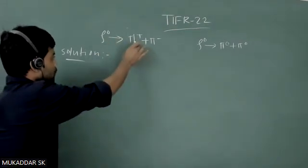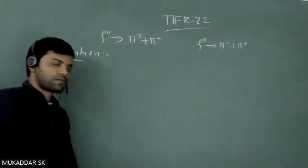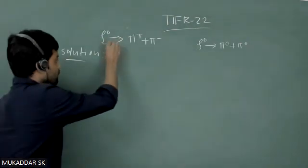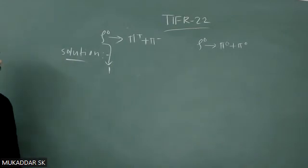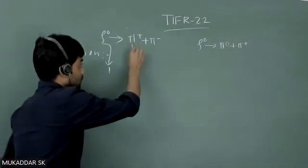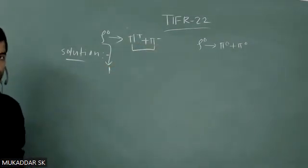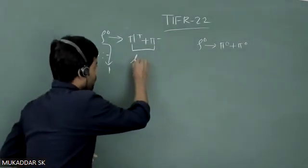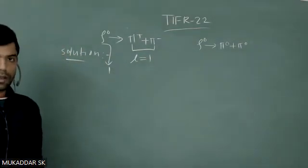For rho zero decaying to pi plus plus pi minus, rho zero has spin quantum number that is one. So on the left hand side you will have angular quantum number that will be one. But on the right hand side, the spin of pi plus and pi minus is zero. So to conserve the total angular momentum, the orbital quantum number of the product should be one.